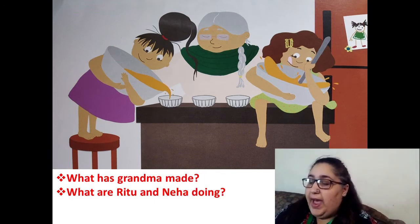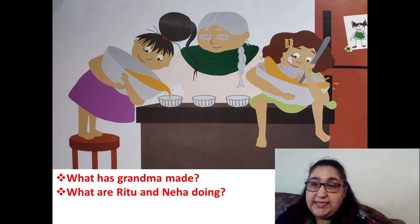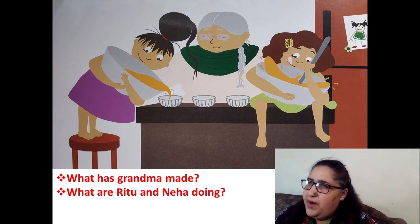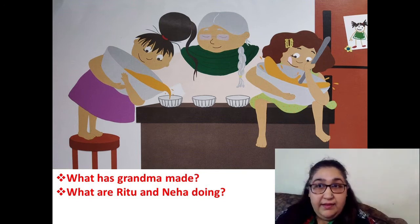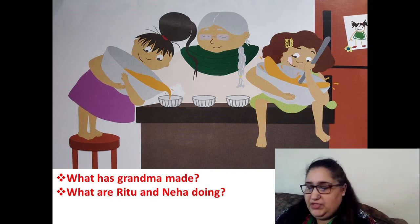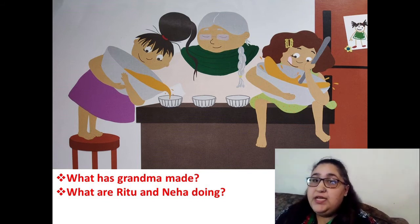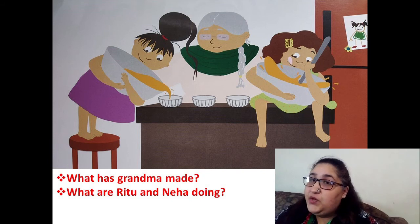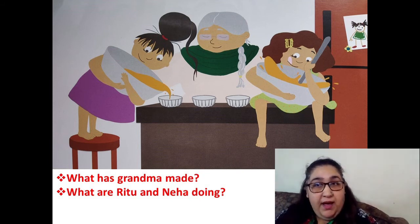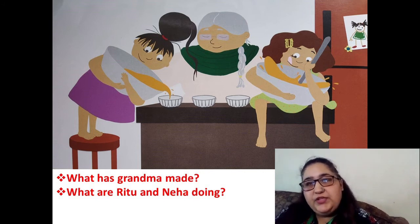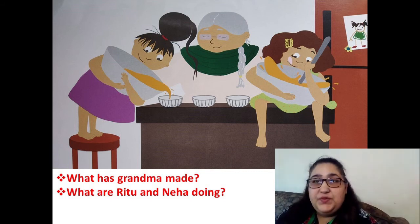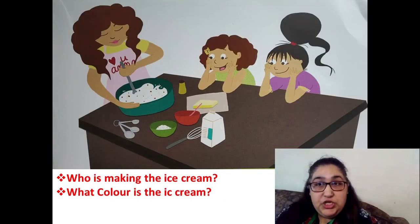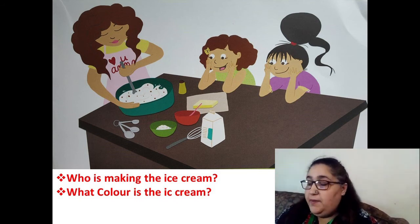Let's turn to the next page — look at this picture carefully. In this picture we can see Ritu, Neha, and Grandma. What is Grandma making? Grandma is making — you answer. Now the next question: what are Ritu and Neha doing? In this picture Ritu and Neha are doing something with Grandma. Do you do the same thing with mama when she's in the kitchen? What is the word — what are Neha and Ritu doing to Grandmother?